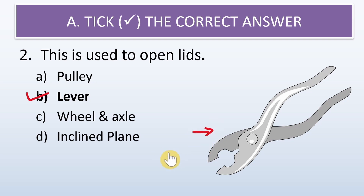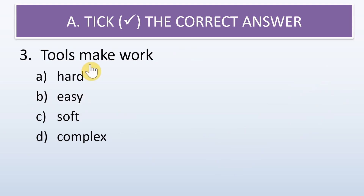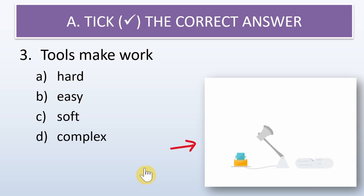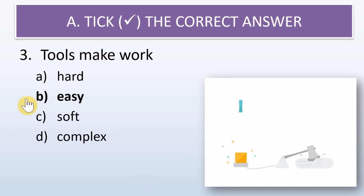Third question: tools make our work hard, easy, soft, or complex? As you can see in the example, tools are used to make our work easy. So the correct answer is option B, that is easy.